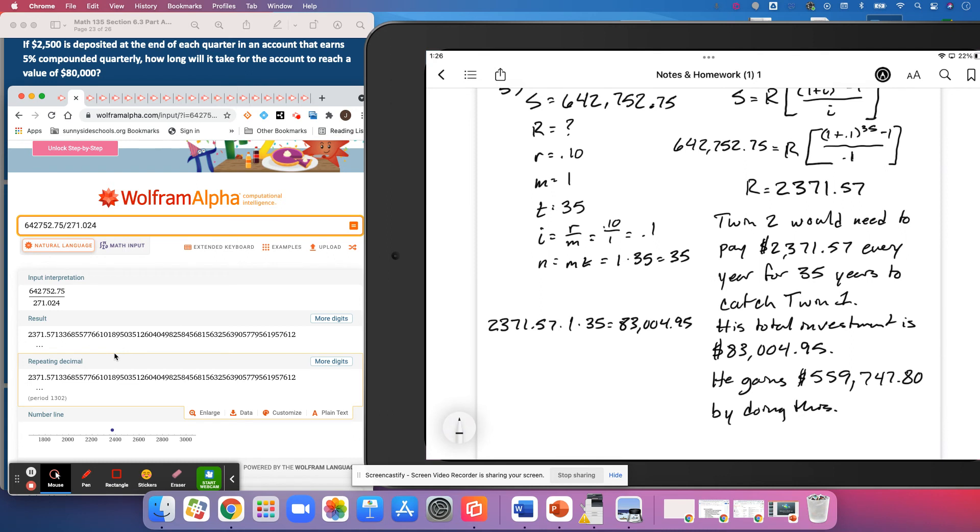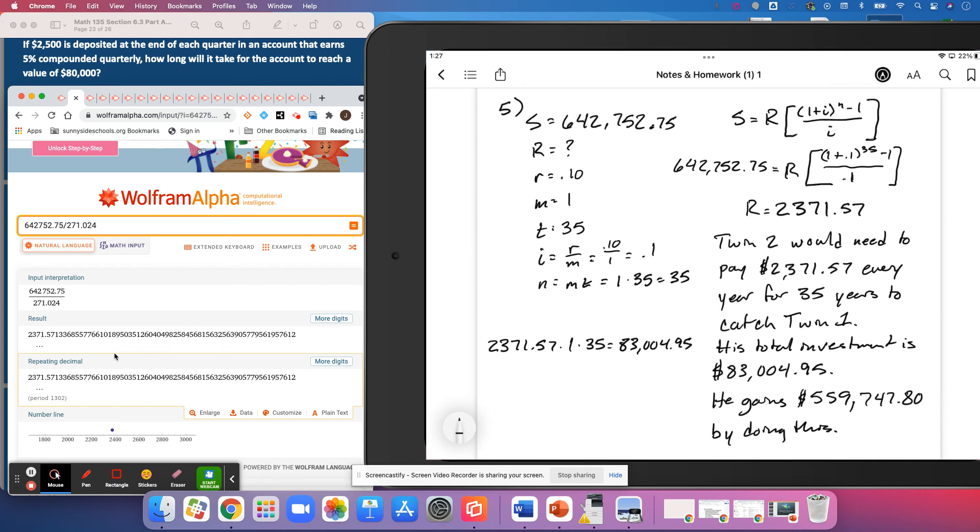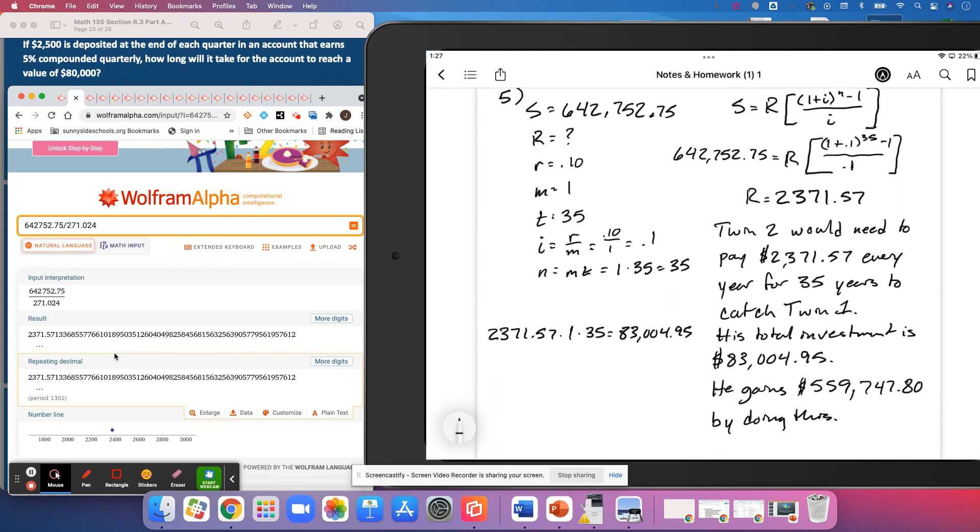And if you remember back to Twin 1, Twin 1 only put in something like $16,000, or sorry, Twin 2 put in something like $16,000 early on in his life and ended up gaining somewhere, it was like $626,000. And so by waiting and trying to catch Twin 1, Twin 2, I know I keep getting Twin 2 and Twin 1 mixed up. I hope you're able to follow along with that. But anyway, the one that waited has to invest almost $400 more per year.